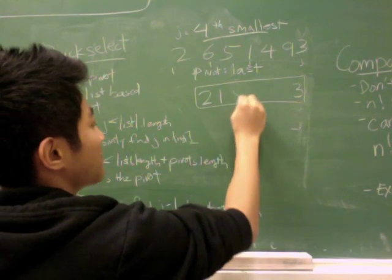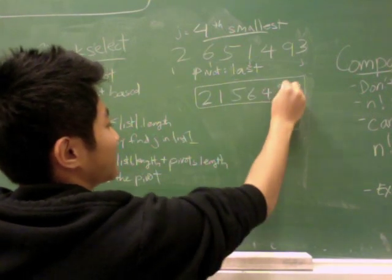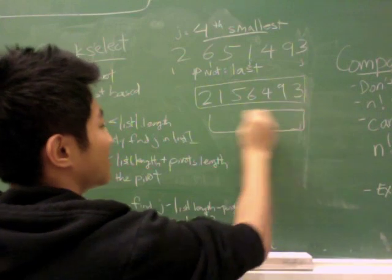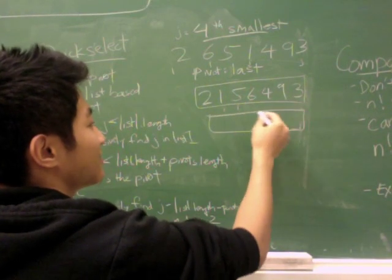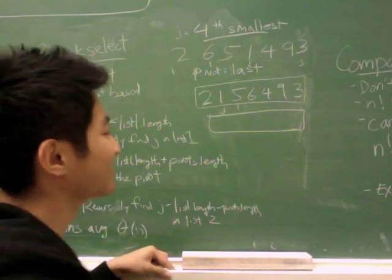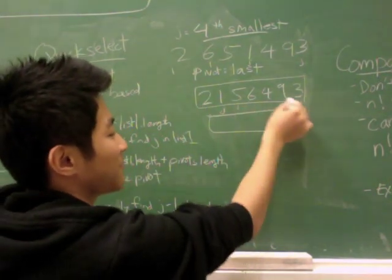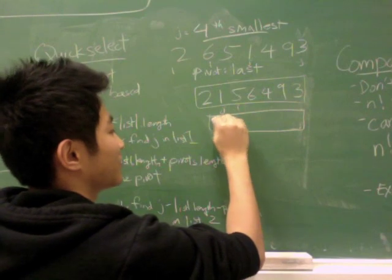So three is our pivot and we start with i and j as usual. And so i stops at six here and j stops at one because one is less than three. And so these two swap: two, one, five, six, four, nine, three. Good. And so our search continues. i stops at five now, but j doesn't stop until it hits one again. And so we know to swap five and three and swap the pivot back.